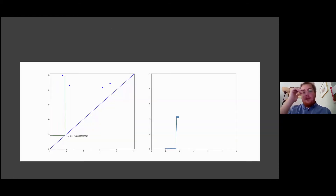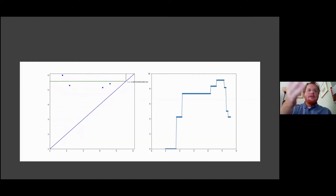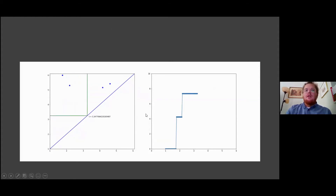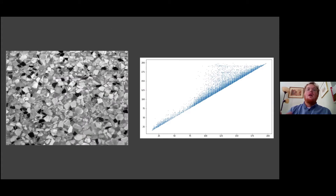A GIF demonstrates the Betti curve being computed: as the fundamental box scans the diagram, a curve is constructed on the right as it moves. Looking at a more realistic example for these curves on an actual image and its diagram, we compute all the basic curves to get a feel for how they look in practice.